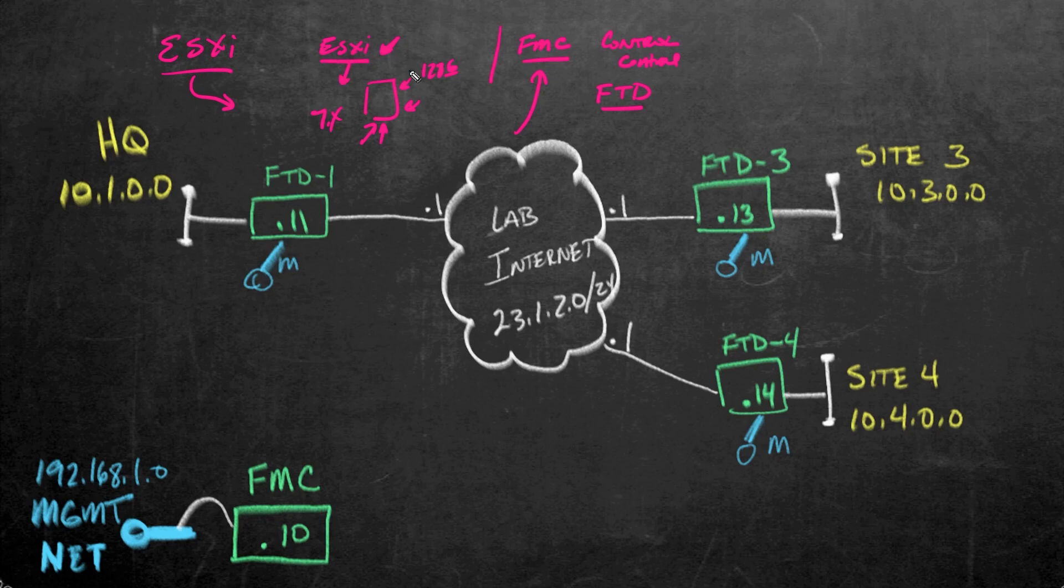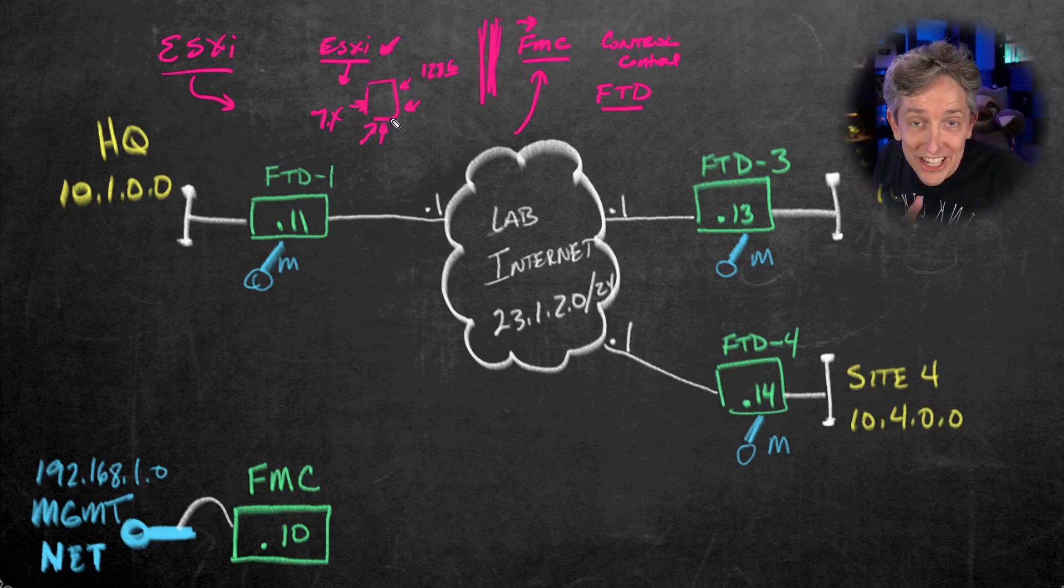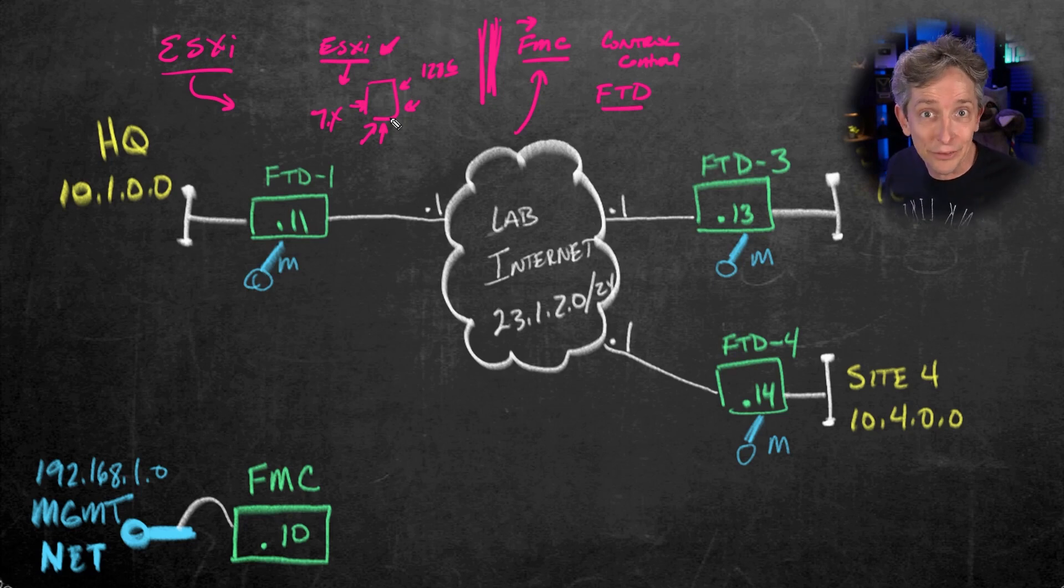So the ESXi host software, we can get an eval of that, we can get evals of FMC and FTD. Everything over here is going to be running as a VM. So the FTDs are going to be running as a VM on the ESXi host, the Firepower Management Center is going to be running as a VM on the ESXi host. And the networking that we see here on the screen is all going to be provided inside of the ESXi host. And have no fear, I'll walk you through each and every step of getting that setup exactly right as well.